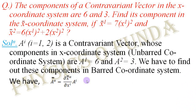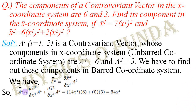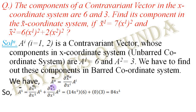Let us see the components. The first component in the barred coordinate system is a1-bar. We get this by putting alpha equal to 1 in the transformation equation. In the right-hand side, del x-bar alpha in the numerator becomes del x1-bar with alpha equal to 1. Since i is the repeated or dummy index, summation is done over i from 1 to 2. Expanding the summation we get: del x1-bar over del x1 times a1, plus del x1-bar over del x2 times a2.